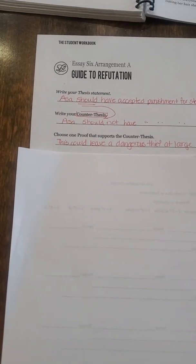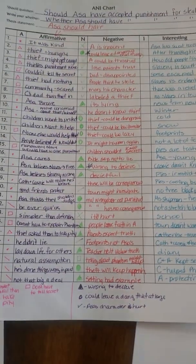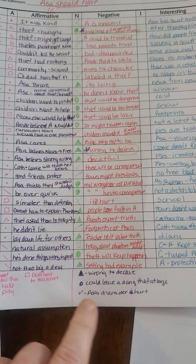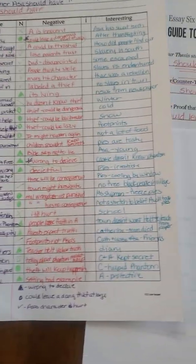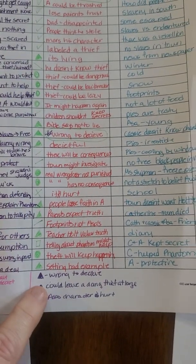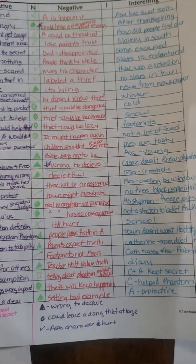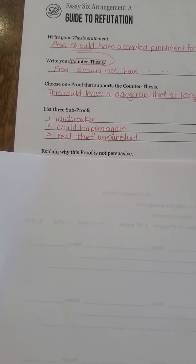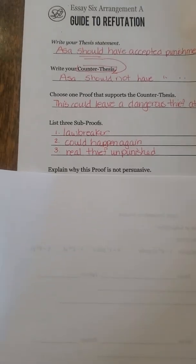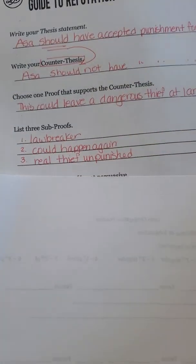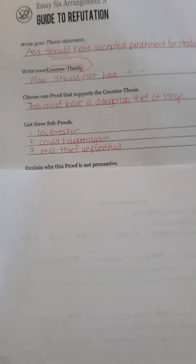Then I'm going to choose one proof that supports the counter-thesis. I did that by going back and looking at which argument I have the most support for. I chose: this could leave a dangerous thief at large — all of my circles. I've got a bunch of circles with different supports for this. I'm going to choose three of them. My three sub-proofs are: you've got someone who's a lawbreaker, it could happen again, and it leaves the real thief unpunished. Right now I'm just jotting down my ideas — I'm not writing my paper.